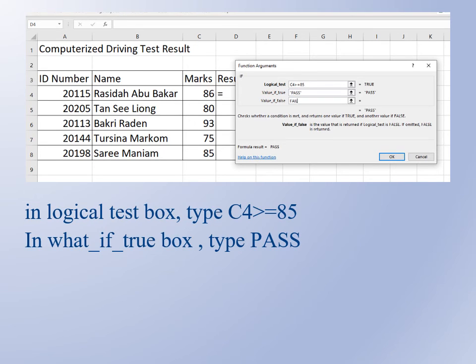The computer will automatically add the inverted comma. In the value if false box, type fail. Once you click OK, the result will be pass. Even before clicking OK, the IF function dialog shows you the result: formula result equals pass.